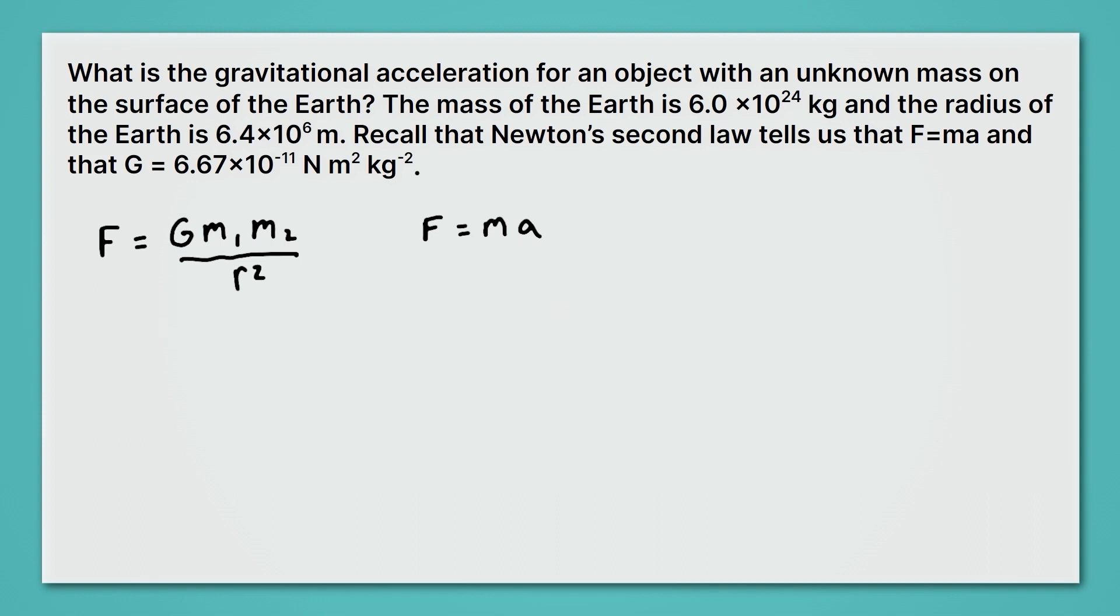And remember, our problem is looking for that A there, that acceleration. So we're going to substitute that in. But before we do that, let's decide what mass that is. Is that mass one or mass two? Well, we'll just call it mass one. That's the mass of the thing being attracted to Earth. And that means mass two is the mass of the Earth. So let's get rid of the two, and we'll put a little E there just to remind us that that's the mass of the Earth.